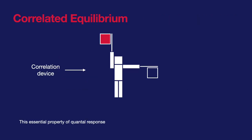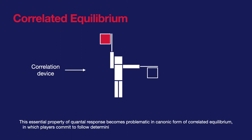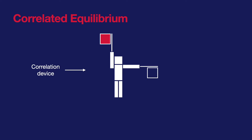This essential property of Quantal Response becomes problematic in a canonical form of correlated equilibrium in which players commit to follow deterministic strategies recommended by a central correlation device.